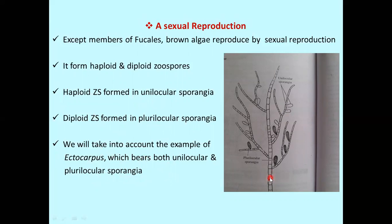In this figure you can see this is the Ectocarpus plant. This is the main branch and these are the side branches. The black-colored sporangia is known as plurilocular sporangia because it has many chambers or cavities. The white-colored sporangia is known as unilocular sporangia because it has one cavity or cell.